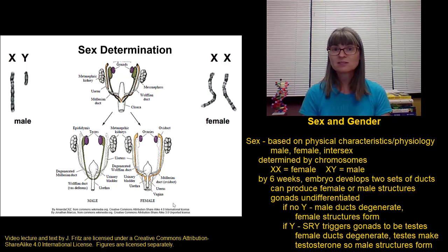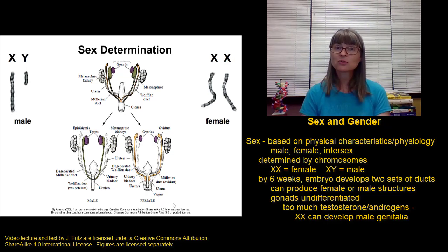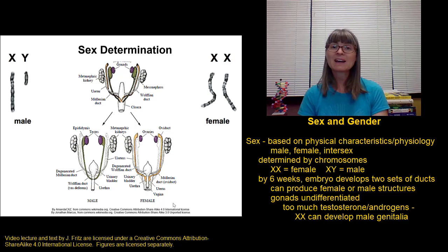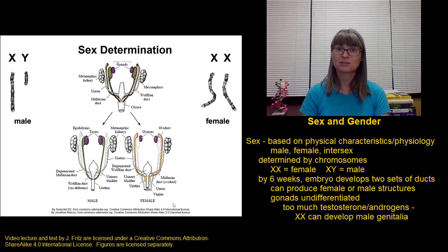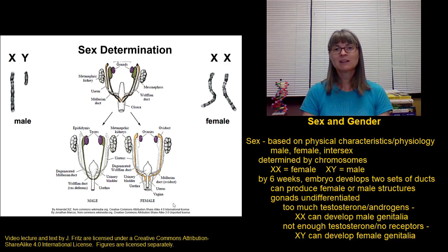However, there are a few places where the system can go awry. For example, if an embryo with XX chromosomes is exposed to too much testosterone or other androgens, they can actually develop male reproductive structures even without a Y chromosome — so an XX individual could have a penis, a scrotum, and perhaps some of the duct system of the male reproductive system. It's also possible to go the other way: XY embryos that either don't produce enough testosterone or don't have the appropriate testosterone receptors can, even with XY chromosomes, develop female reproductive structures and female external genitalia.